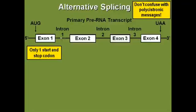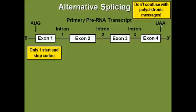In alternative splicing, you have one single messenger RNA, and unlike polycistronic messages, you have one start and one stop codon. The ribosome will come along, see the start codon, and stop when it sees the stop codon. But prior to being read by the ribosome, there's going to be some splicing that happens.